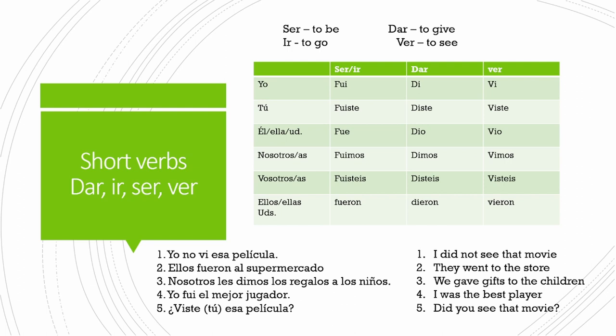What you're going to notice about these four verbs is that they follow the same endings as one another and they don't have very many things in common with other verbs. Ser and ir do in fact have the exact same conjugation in the preterite tense, but don't worry — it won't be ambiguous. Most of the time you're going to be using the form ir in the preterite and not ser.